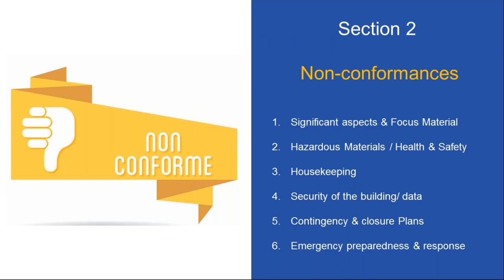I'm going to discuss some of the nonconformities from an auditor's point of view. When an RQO auditor or ISO auditor walks in, the starting point is usually significant aspects — hazardous materials and health and safety, housekeeping, security of the building, contingency and closure plans, and emergency preparedness and response. There are other areas as well, such as management review. But I think most of the nonconformances arise in these six areas, whether it's ISO 9000, 14000, R2, or e-Steward.